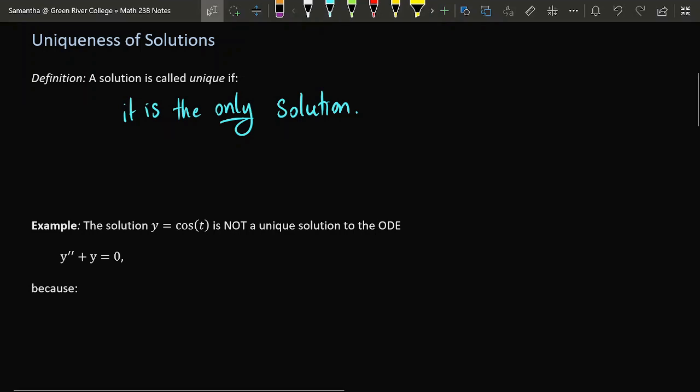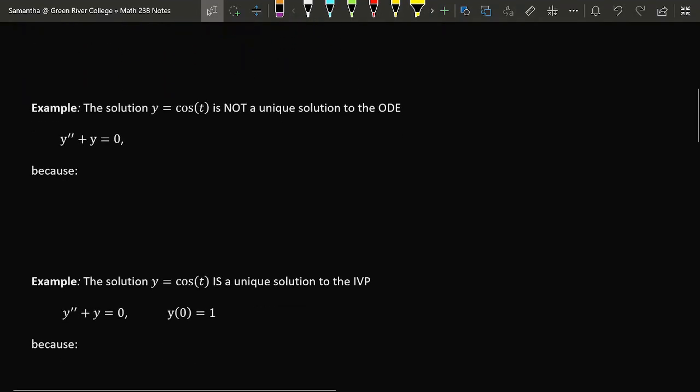For example, if we look at the ODE y'' + y = 0, the solution y = cos(t) is not unique. The reason being that there is another solution out there to this equation, namely the solution y = sin(t), a different function which is also a solution.